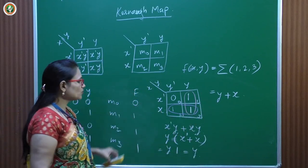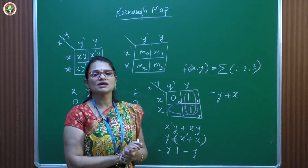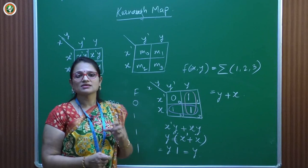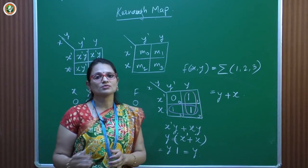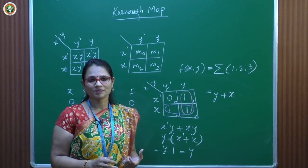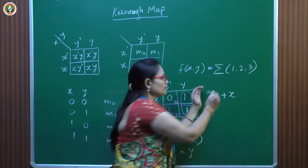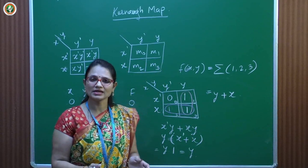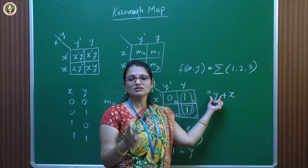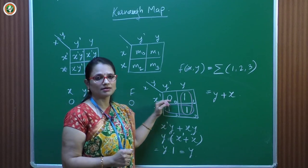Always find the maximum possible grouping. If grouping two squares gives a term with two variables but grouping four gives a term with one variable, prefer the larger group. Overlapping is allowed. When Boolean equation simplification means minimizing terms: minimize the number of terms and minimize the number of literals in each term. If I can reduce a 3-literal term to 1 literal, that is what I must do.